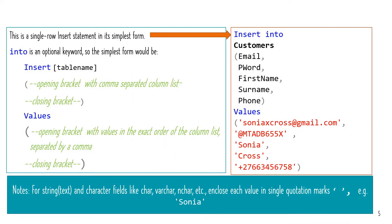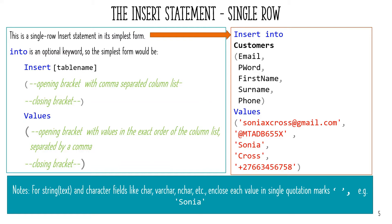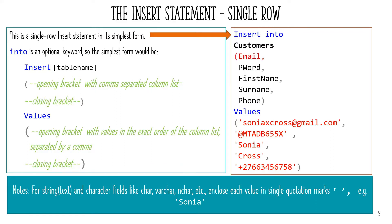The Single Row Insert Statement. Start your insert with the INSERT keyword, then the INTO keyword, which is optional. Then specify the table name, followed by an opening bracket. List the names of the columns you want to insert data into, separated by a comma. Finish the column list with a closing bracket.